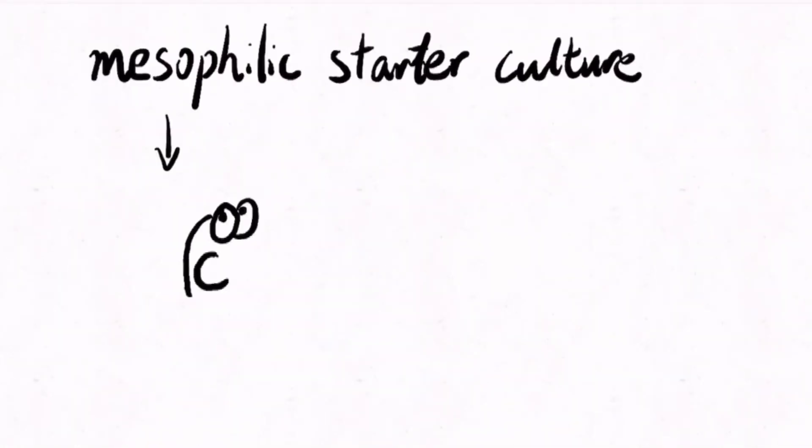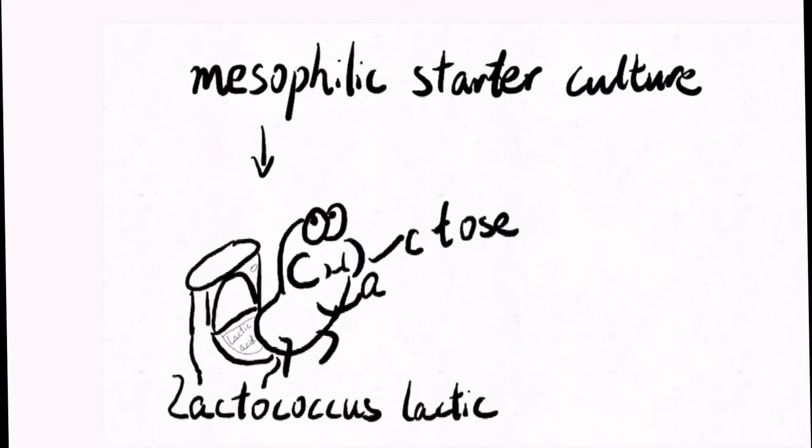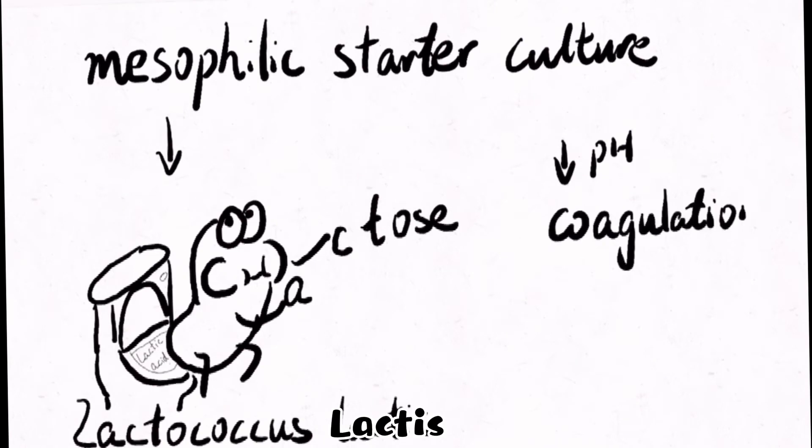The mesophilic starter culture consists of lactococcus lactis, which consumes lactose in milk and produces lactic acid, decreasing the pH and assisting the coagulation. The temperature is kept at 32 degrees Celsius since mesophilic bacteria has the optimum growth temperature between 25 and 30 degrees Celsius.